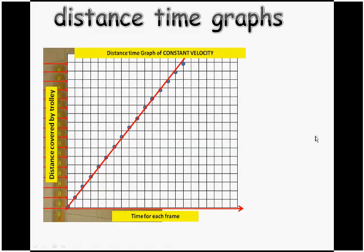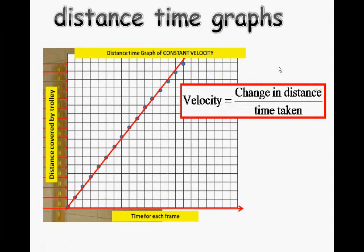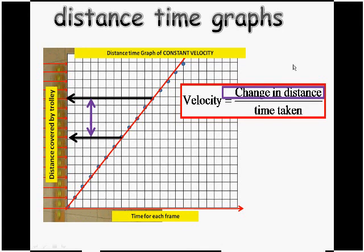Okay, so we should recognize this graph from the previous video. It's distance covered and time taken, and we've got a straight line, so it's constant velocity. And, from this, we can calculate the velocity of the object. Velocity is change in distance divided by time taken. So, if I read off the graph a change in distance, as represented by this purple line, and divide it by the time it took for that change in distance to happen.